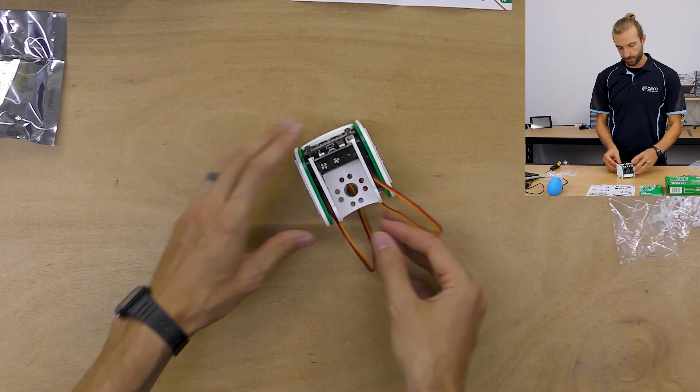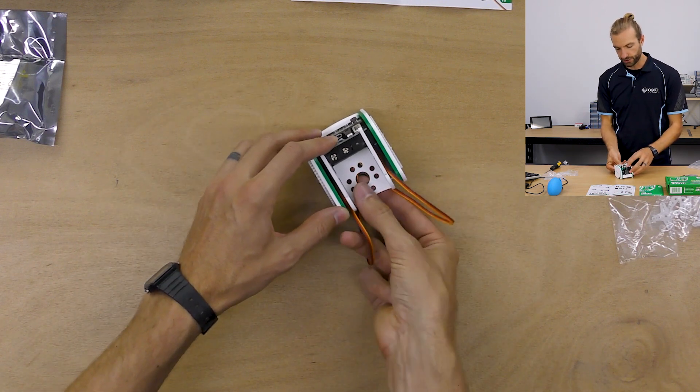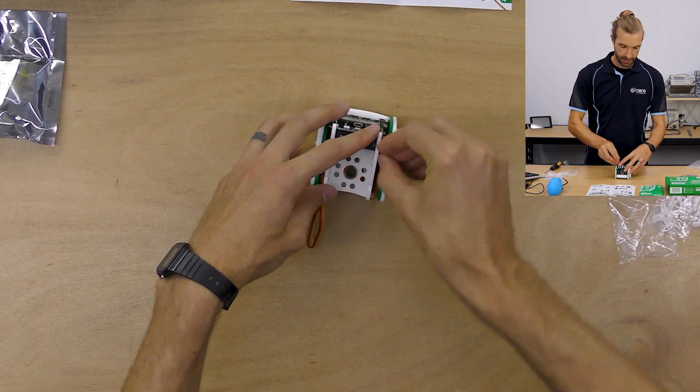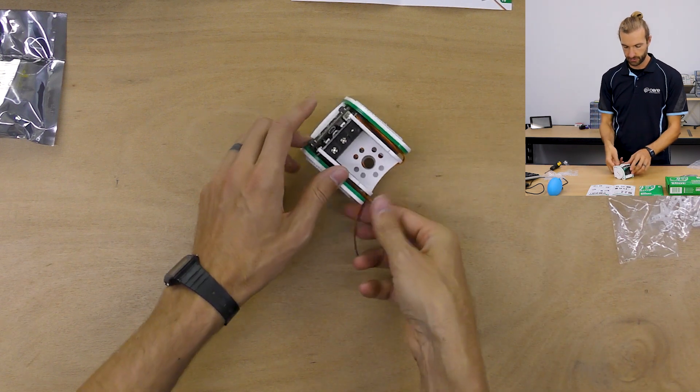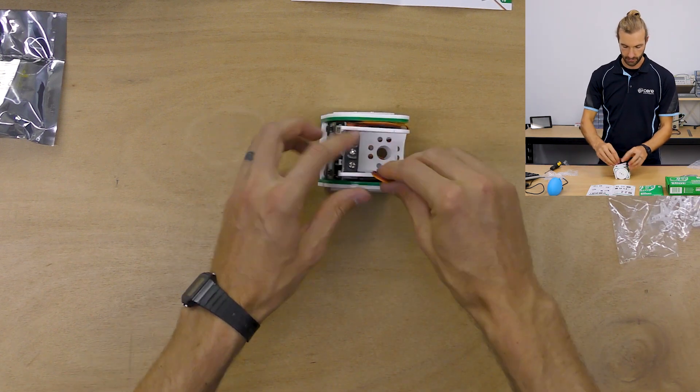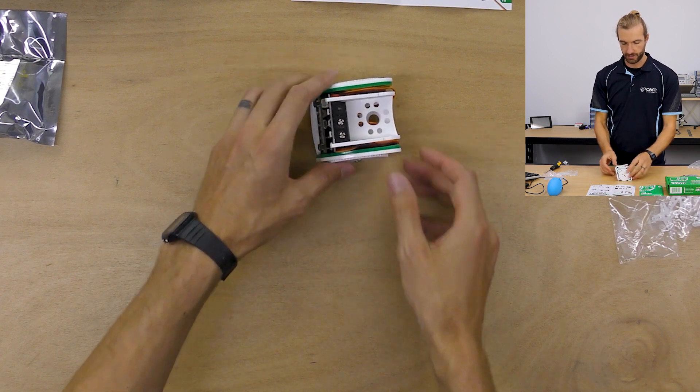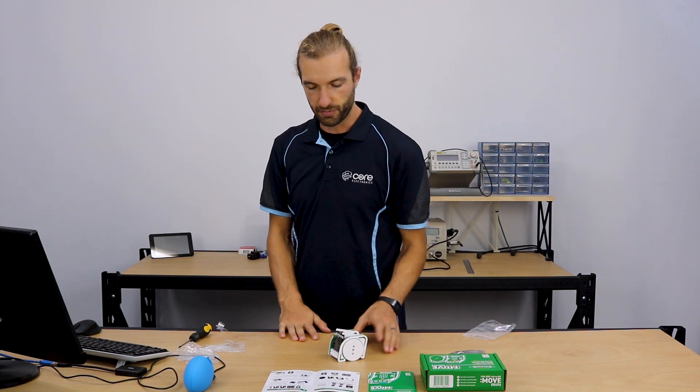So you notice now that we might have a bit of extra wire. We just tuck that in between the two spaces so it's out of the way. And there we have it. Now that our move mini is complete, we can program it now by connecting it to make code.